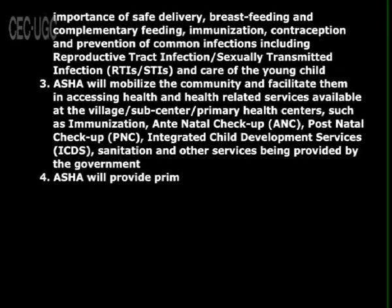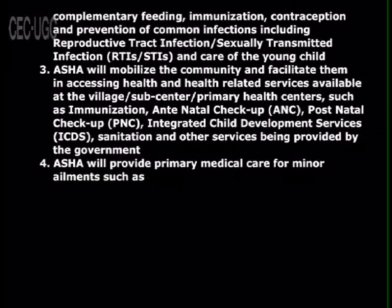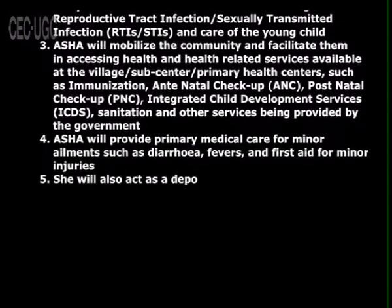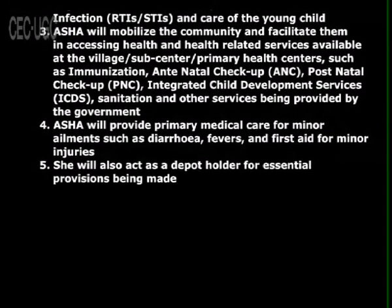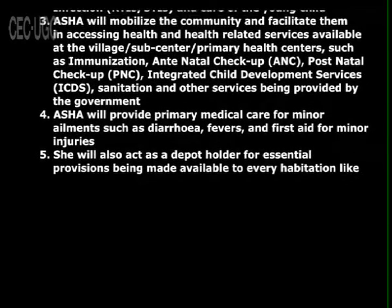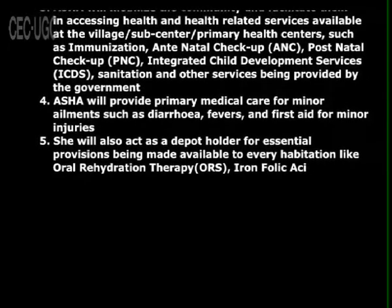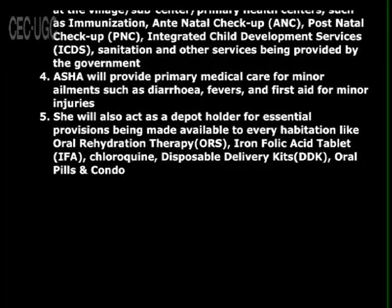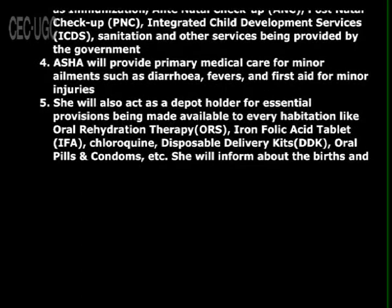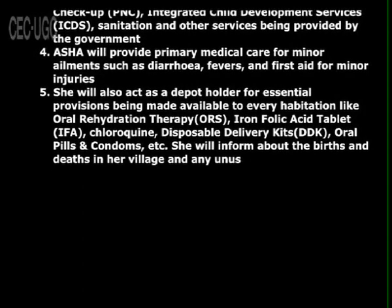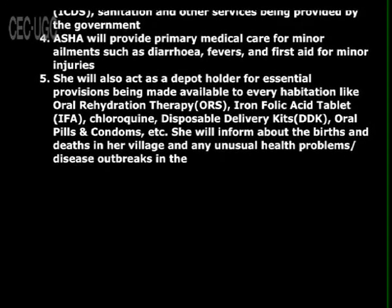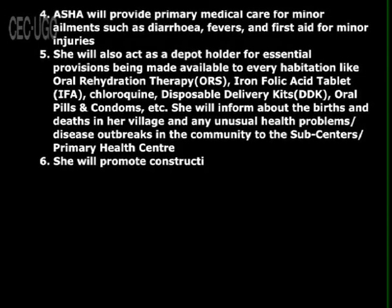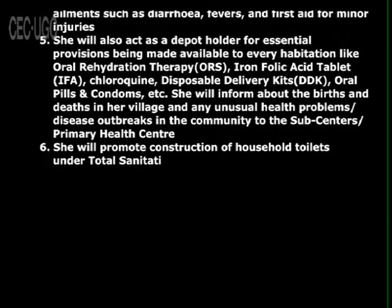Number four, ASHA will provide primary medical care for minor ailments such as diarrhea, fever, and first aid for minor injuries. Number five, she will also act as a depot holder for essential provisions made available to every habitation, like oral rehydration therapy, iron folic acid tablets, chloroquine, disposable delivery kits, oral pills and condoms, etc. She will inform about births and deaths in her village and any unusual health problems or disease outbreaks in the community to the sub-center or primary health center. Number six, she will promote construction of household toilets under the total sanitation campaign.